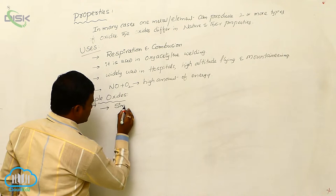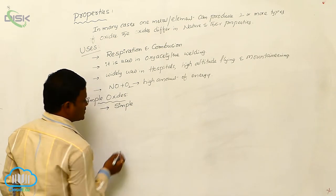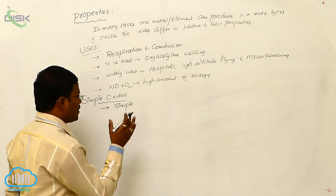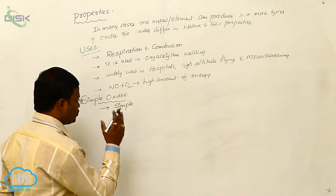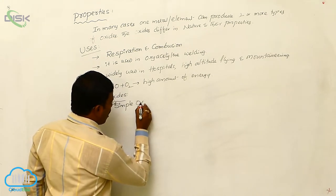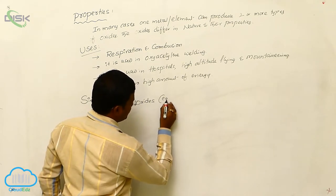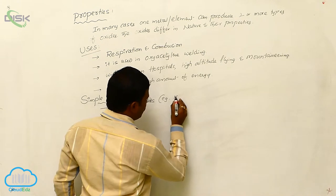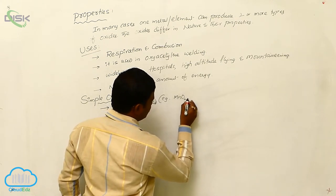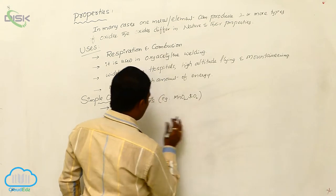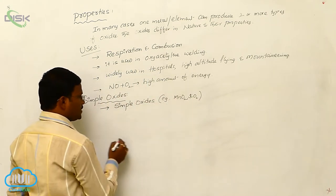The oxides produced from metals and non-metals are widely classified into two types. They are simple oxides. Example: MnO2 or SiO2, etc. All these are called as simple oxides.